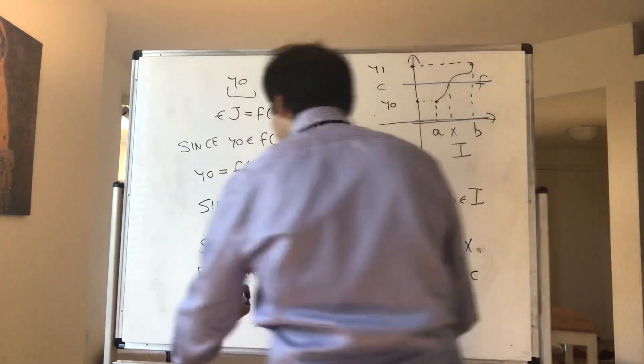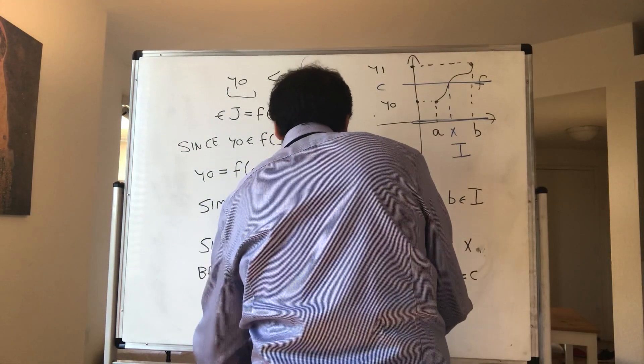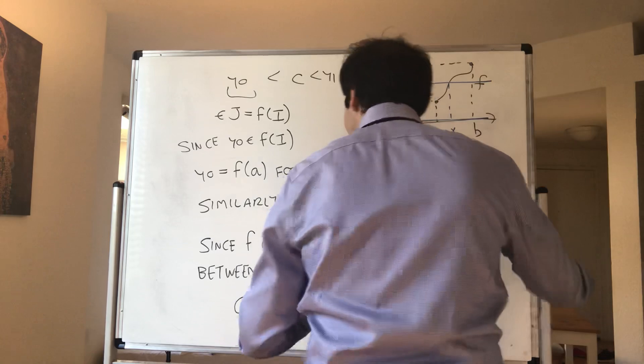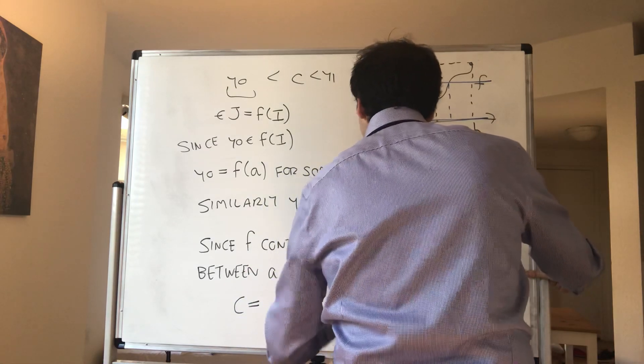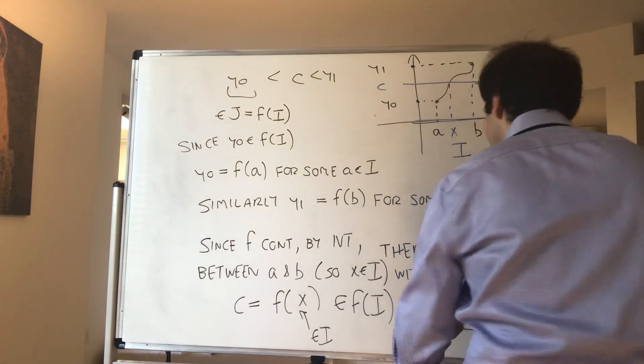But then, what does that tell you? It tells you that c equals f of something, where that something is in I. So by definition, that is in f of I, which is J. And therefore, we're done.